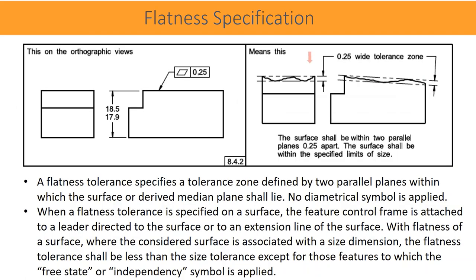A flatness tolerance specifies a tolerance zone defined by two parallel planes within which the surface or derived median plane shall lie. No diametrical symbol is applied. When a flatness tolerance is specified on a surface, the feature control frame is attached to a leader directed to the surface or to an extension line of the surface. Where the considered surface is associated with a size dimension, the flatness tolerance shall be less than the size tolerance, except for those features to which the free state or independency symbol is applied.